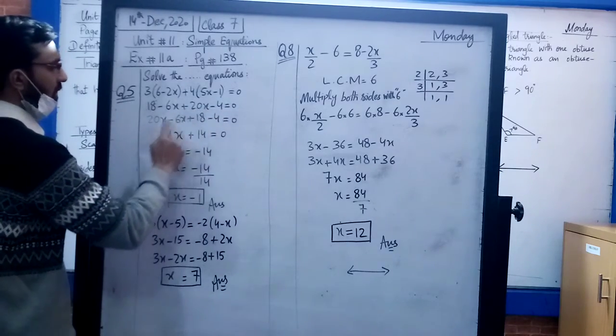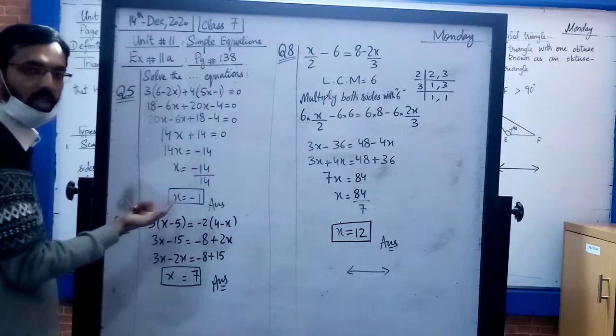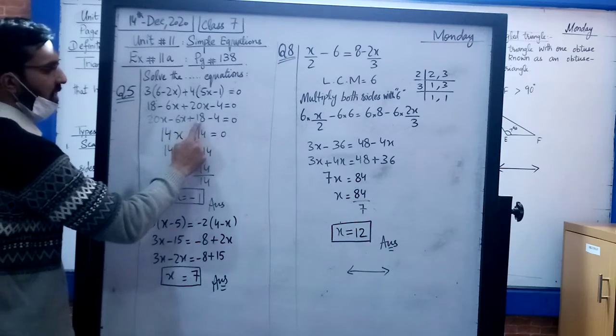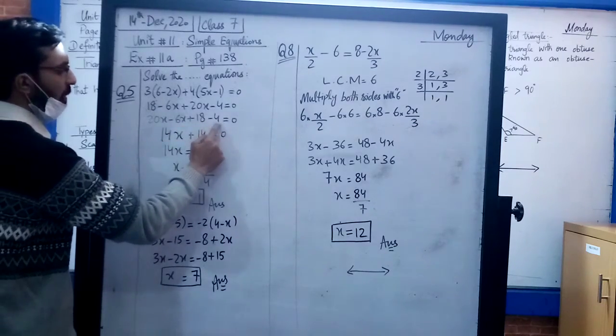Now arrange the terms: 20x minus 6x plus 18 minus 4 equals 0. Combining like terms: 14x plus 14 equals 0. Move 14 to the right-hand side by subtracting.